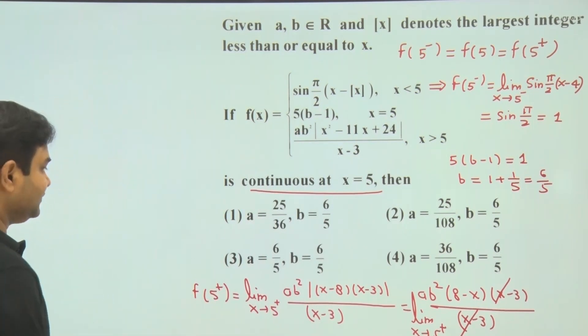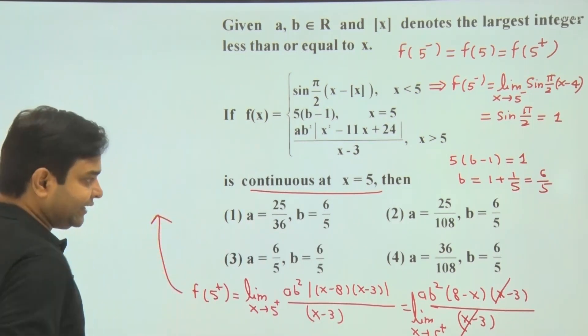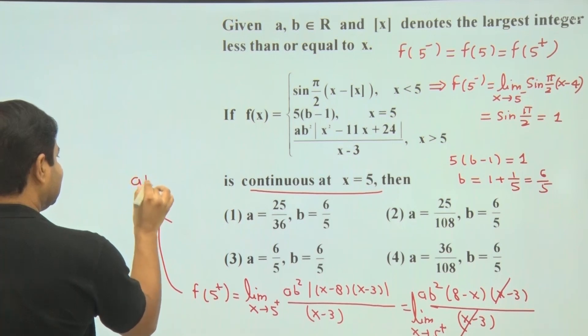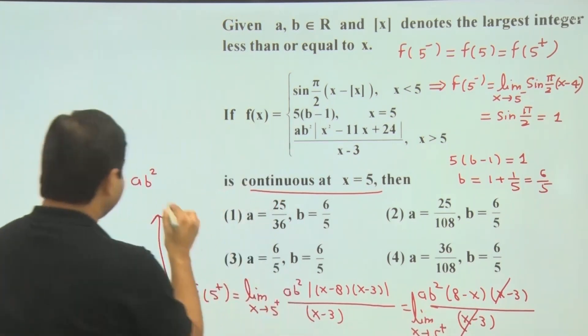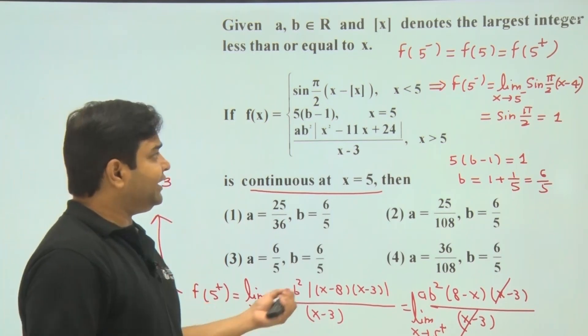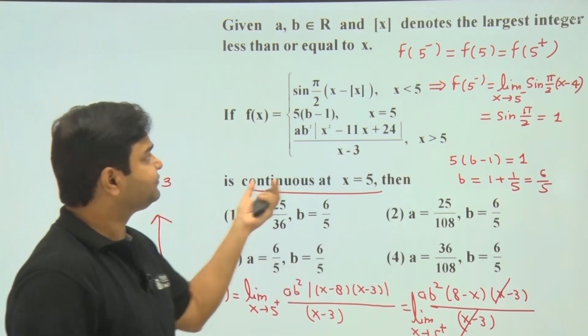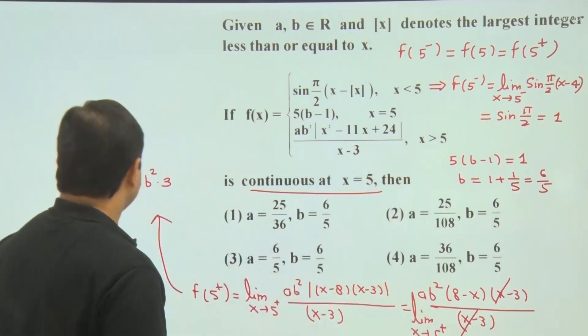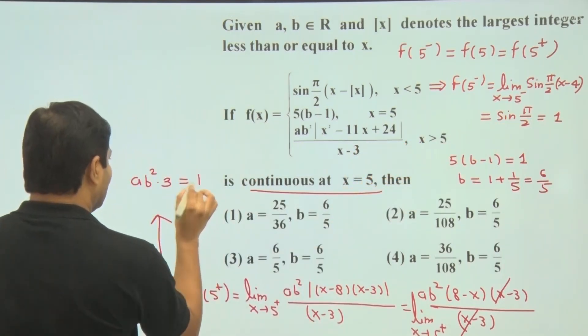Now put x equals 5, then we are getting f of 5 plus is ab² and if x equals 5 this is 3. Now again equate this value equal to LHL that is 1. So we can write this equals 1.